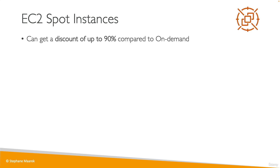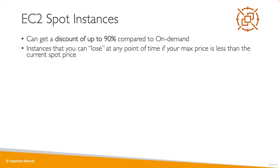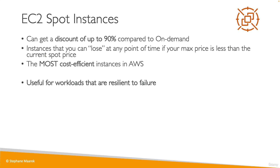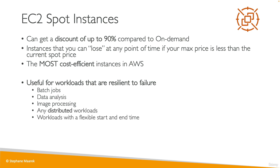Spot instances have the most aggressive discounts — up to 90% compared to on-demand. But they are instances you can lose at any point in time because you define a max price you're willing to pay. If the spot price goes over it, you're going to lose the instance. They're the most cost-efficient instances in AWS, and they're very helpful if you have a workload that is resilient to failure — such as batch jobs, data analysis, image processing, distributed workloads, or workloads with a flexible start and end time. They're not suited for critical jobs or databases, and the exam will test you on that.